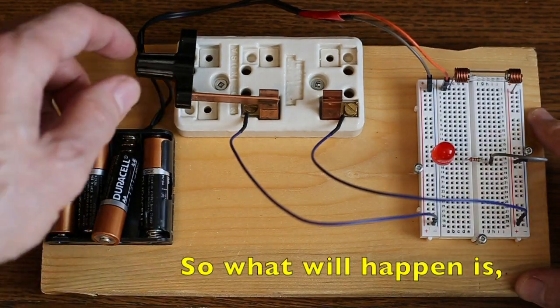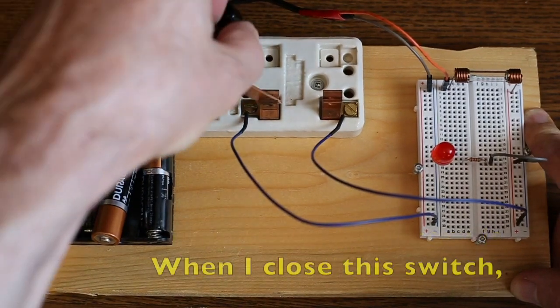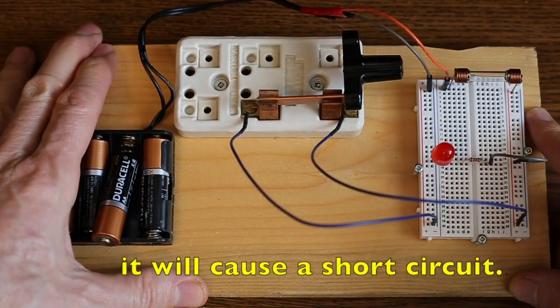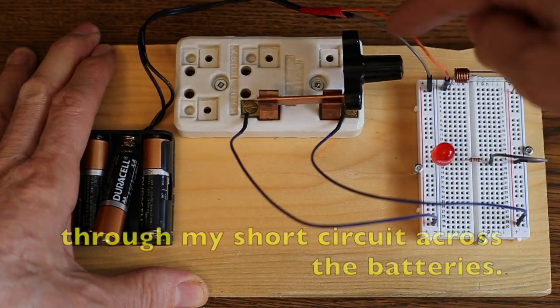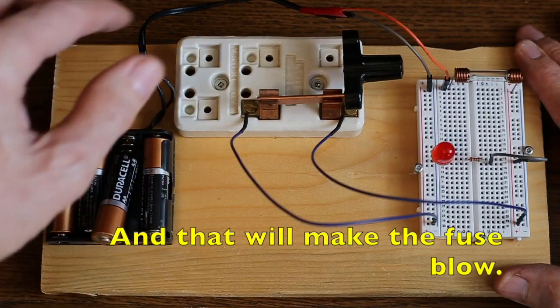So, what will happen is, when I close this switch, right now my battery is disconnected, when I close this switch, it will cause a short circuit. The current will flow through the fuse, through my short circuit, across the batteries. And that will make the fuse blow.